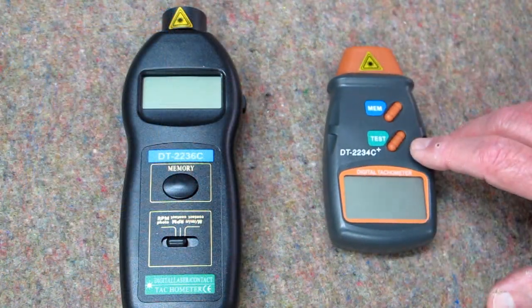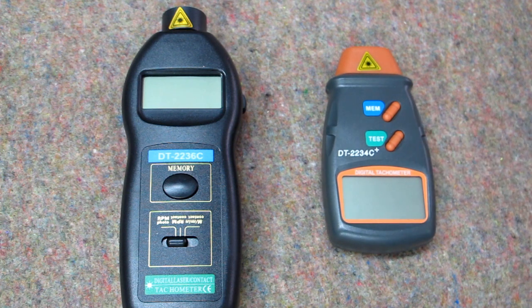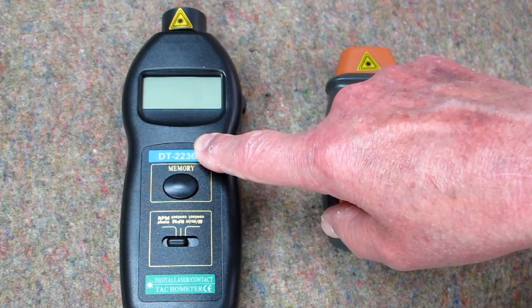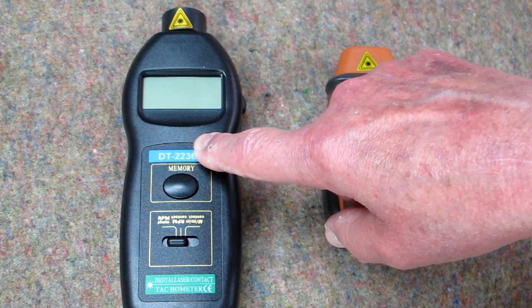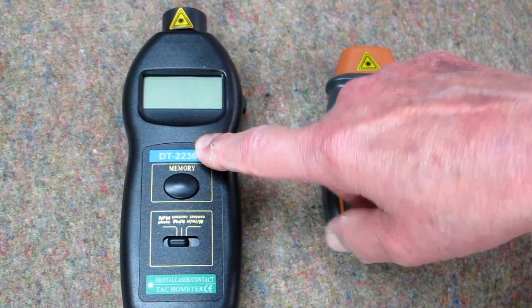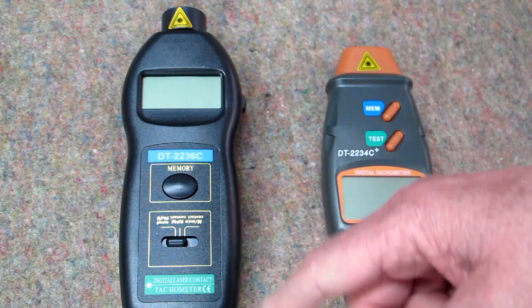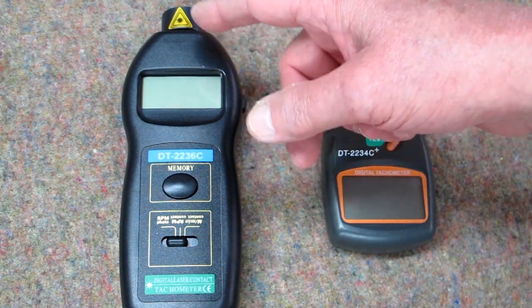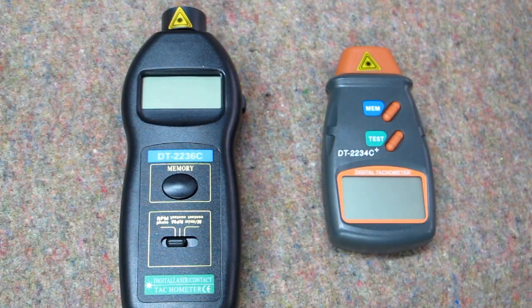This tachometer lists for $20. You can get it for about $12. And this tachometer lists for about $37. And you can get it for $27. This one is made a bit better. And it's more usable because it's a laser and a contact tachometer.